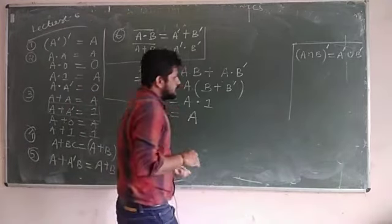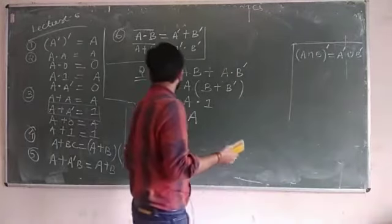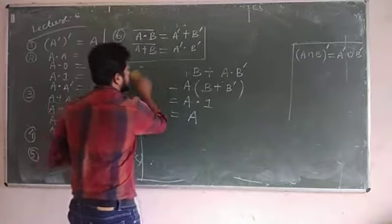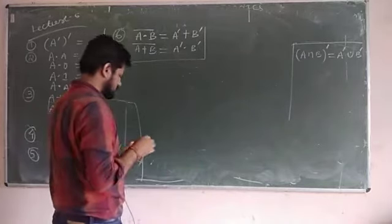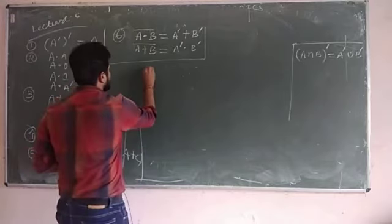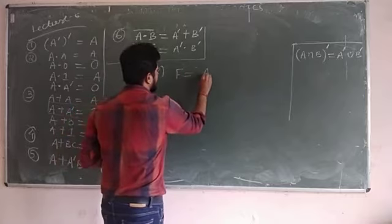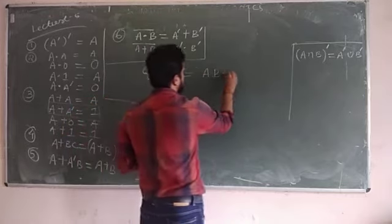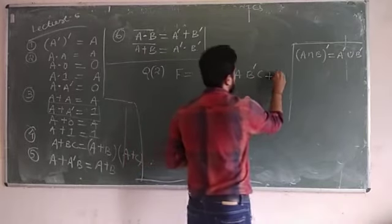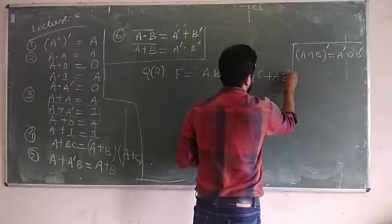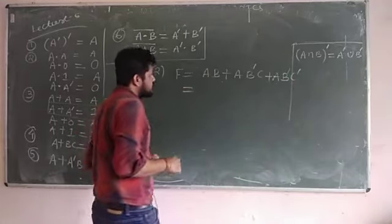The next question is question number 2. The function F is given as AB OR (AB complement C) OR (AB complement C complement). How do we solve this problem?